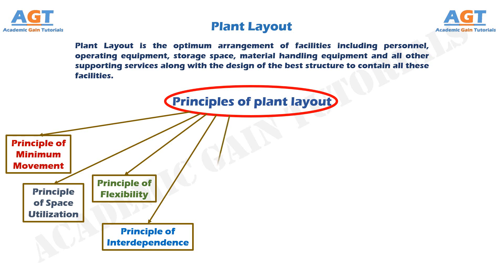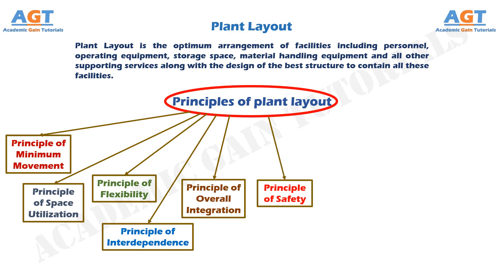Number five: the principle of overall integration. All the plant facilities and services should be fully integrated into a single operating unit to minimize cost of production. Number six: the principle of safety. There should be inbuilt provision in the design of the layout to provide for the comfort and safety of workers.